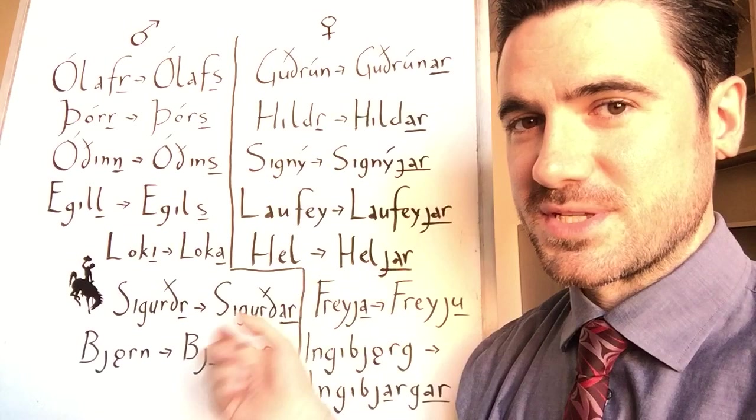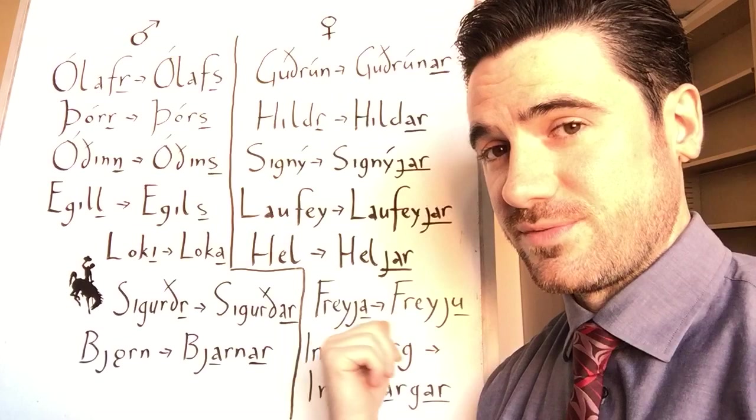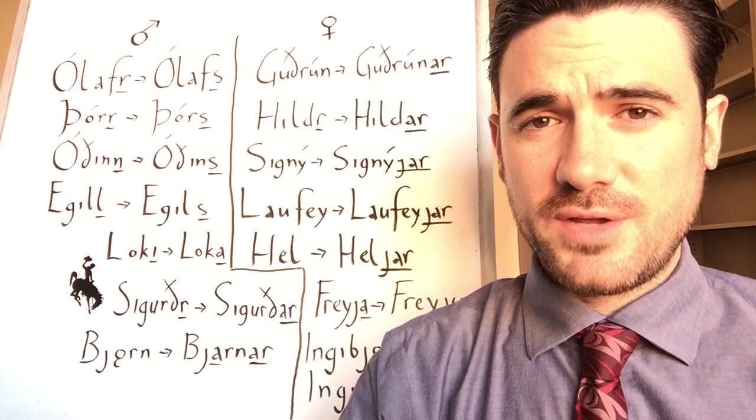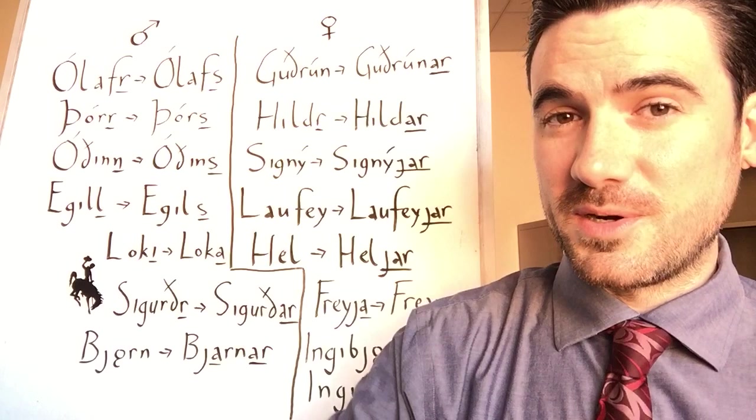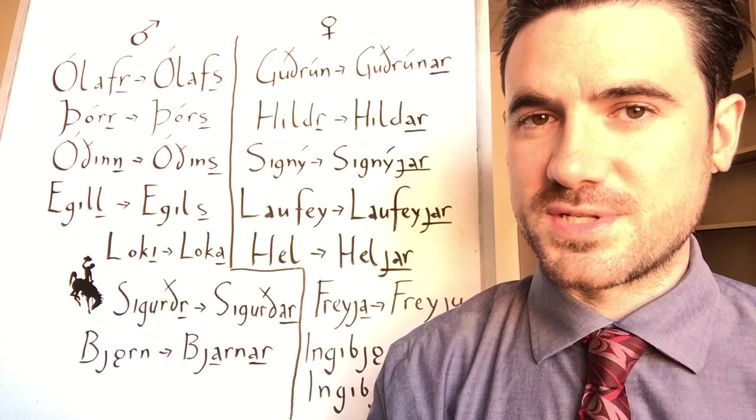Feminine names that end in an A get a U to replace that A in the possessive form. So Freyja, goddess of love, the possessive form of her name is Freyju. And that also applies to any other feminine name that ends in A. Although keep in mind that in Old Norse, many names that are translated in English as ending in A don't actually end in A. The A is added as sort of a faux Latinization. So for instance, the name of Odin's wife is Frigg in Old Norse, not Frigga. Hel is Hel, not Hela, etc.